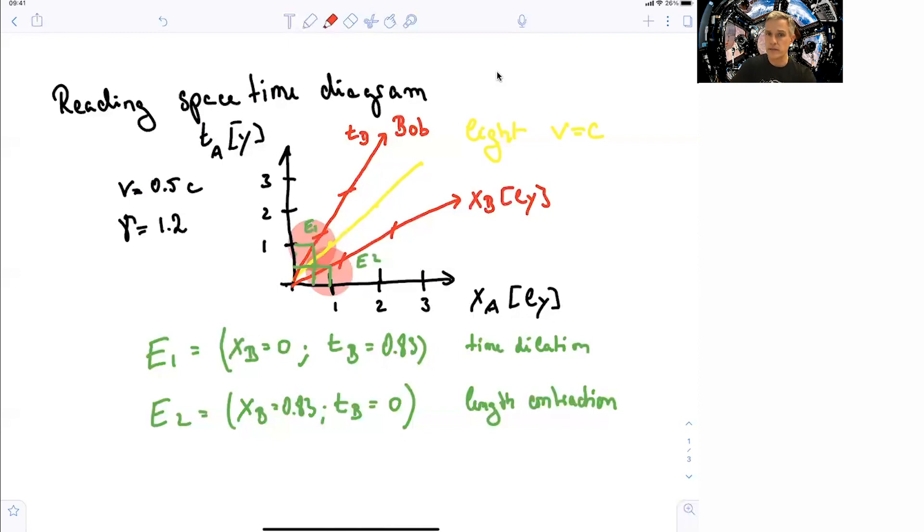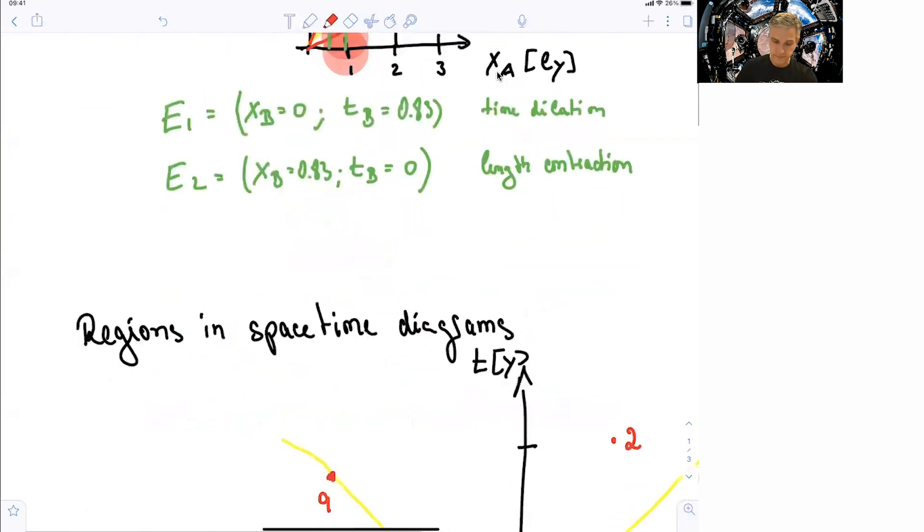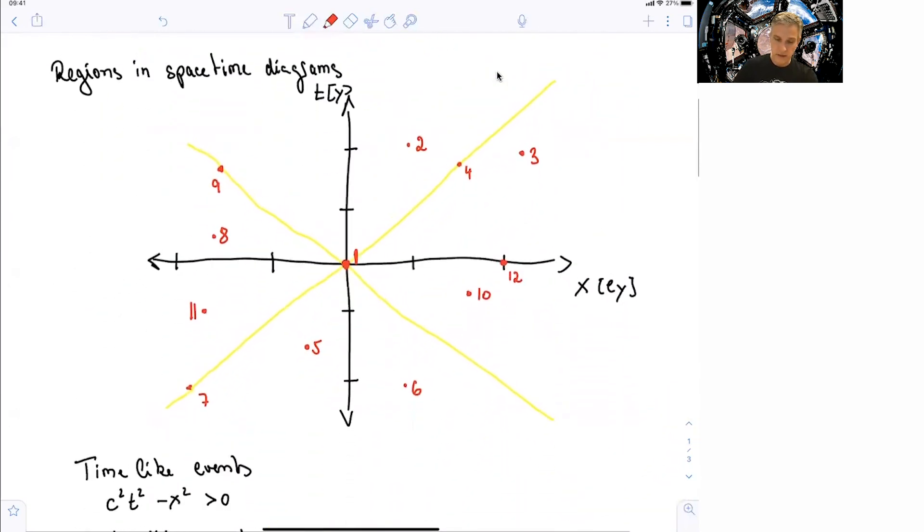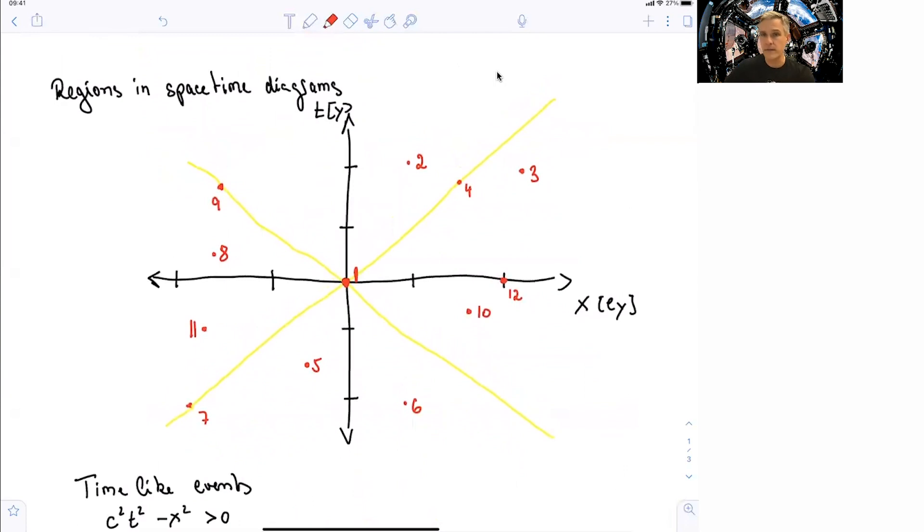Important to note here is that those two, Alice and Bob, will not agree on the time when the measurement was made. All right, so let's zoom out here a little bit and look at another space-time diagram.